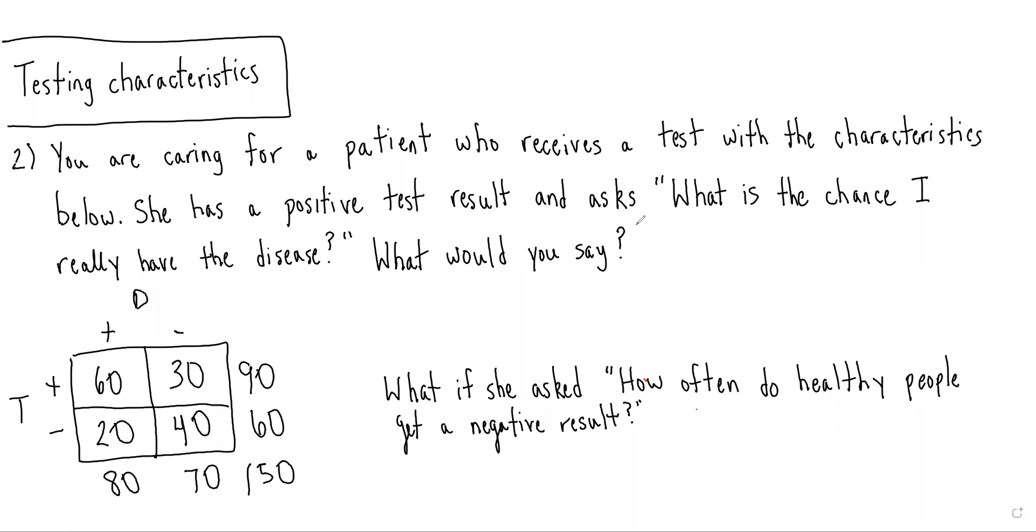So in this case, the patient is asking, given I had a positive test result, what is the chance I really had the disease? This would be the probability of having the disease given you had a positive test result. And we remember this corresponds with positive predictive value, and in this case would be 60 over 90.